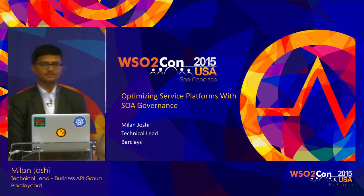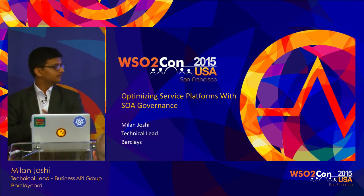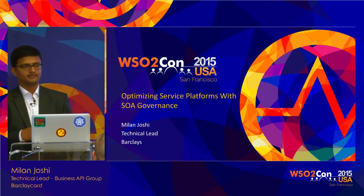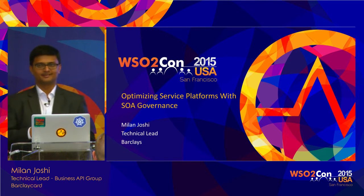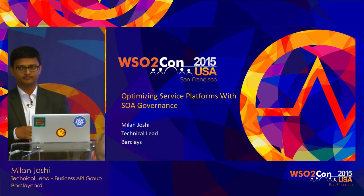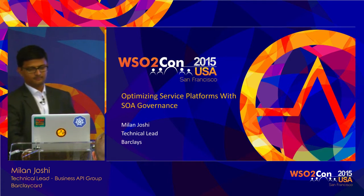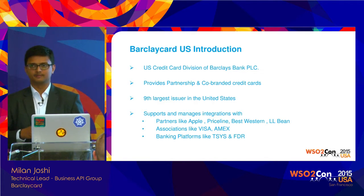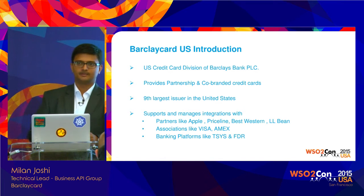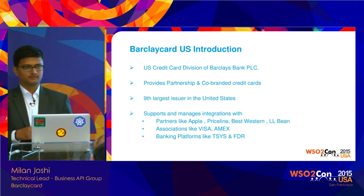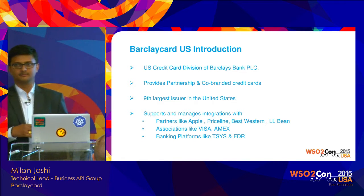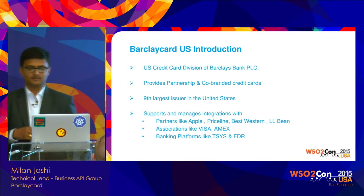Good morning folks. I'm Nilesh Joshi, working with Barclaycard. I'm based in India and our US office is in Delaware. A bit of introduction on the Barclaycard US side: in 2000, Juniper Bank was formed, and after four years in 2004, Juniper Bank was sold by investors to the Barclays Bank PLC group, and the Barclaycard US journey started.